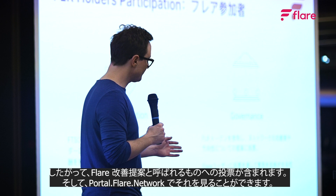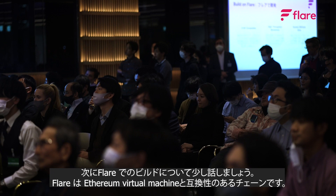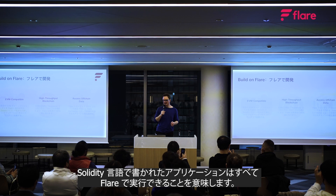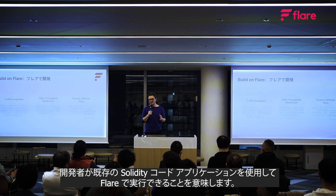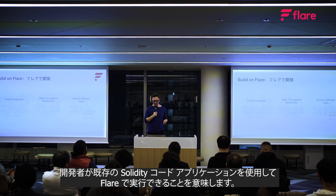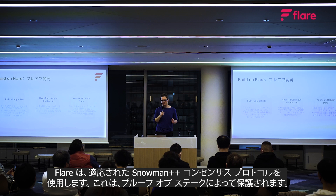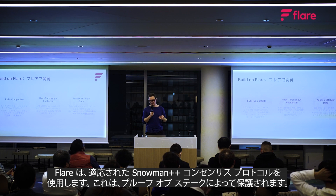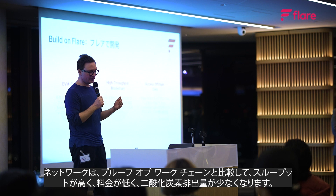Flare is an Ethereum Virtual Machine compatible chain, meaning any application written in the Solidity language can be run on Flare. Developers can use existing Solidity-coded applications and run them on Flare. Flare uses an adapted SnowMan++ consensus protocol secured by proof-of-stake, which allows the network to have high throughput, lower fees, and a lower carbon footprint relative to proof-of-work chains.